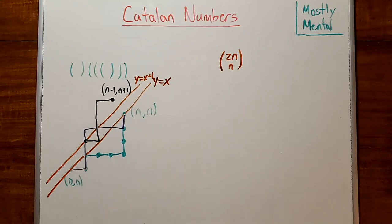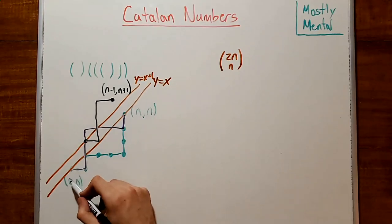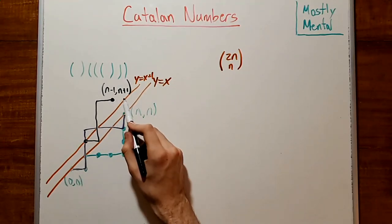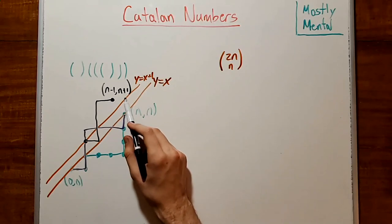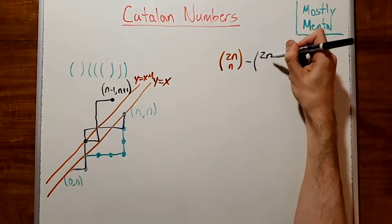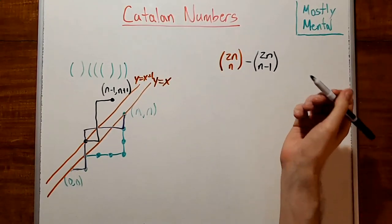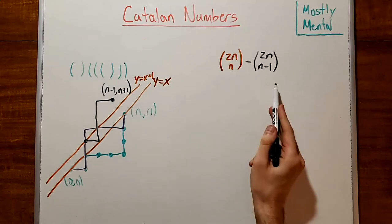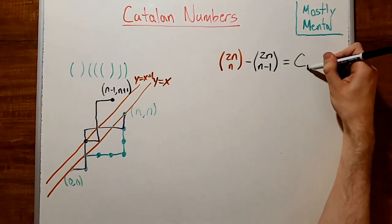And so there's a one-to-one correspondence between these paths that cross over the line y equals x and these paths from the origin to n minus 1, n plus 1, so there must be the same number of them. And we can count the paths to here, that's just going to be 2n choose n minus 1, and this counts all of the paths that stay below our line, so that's going to give us C sub n.